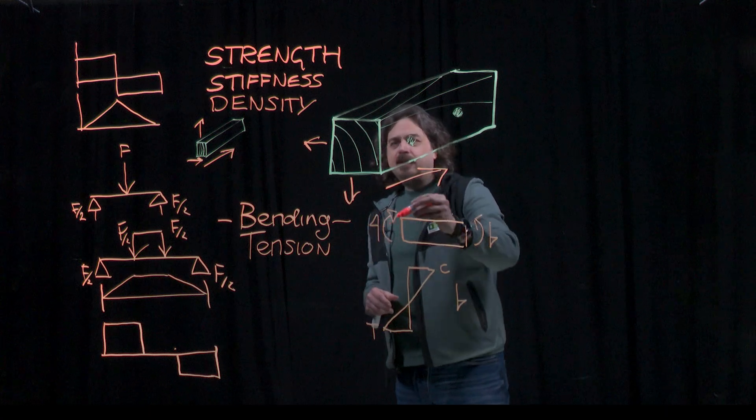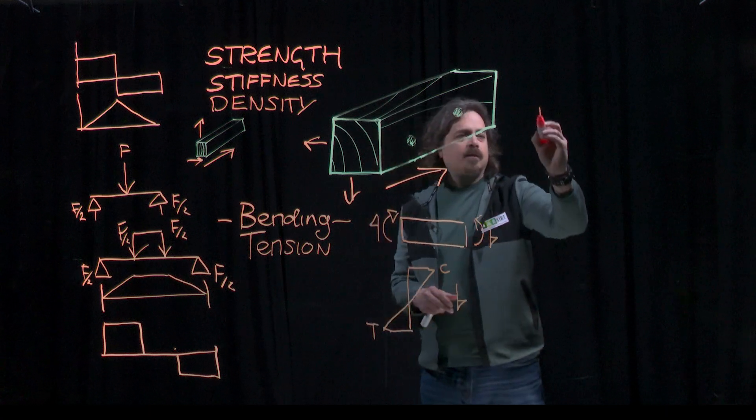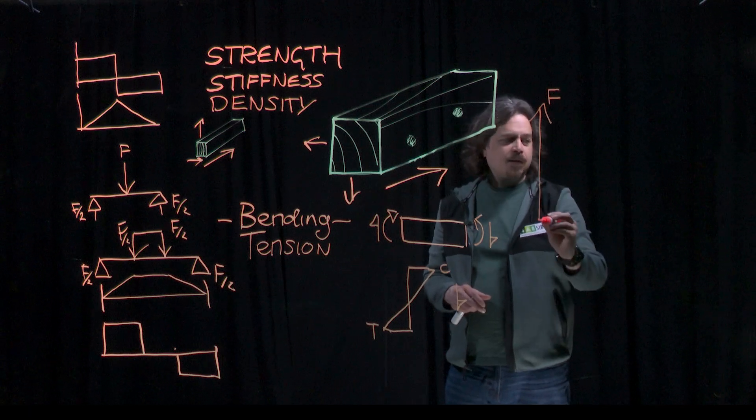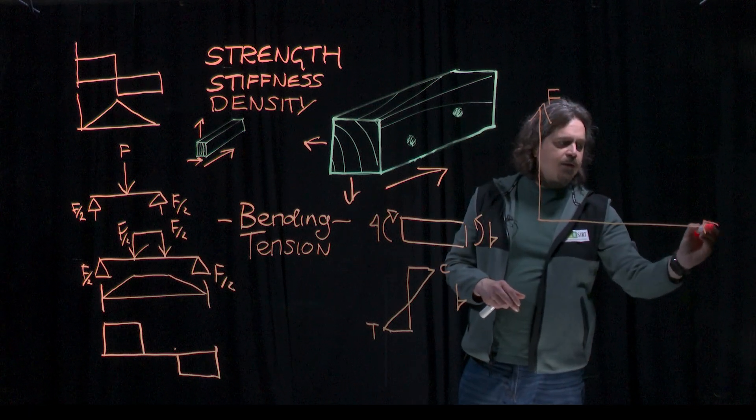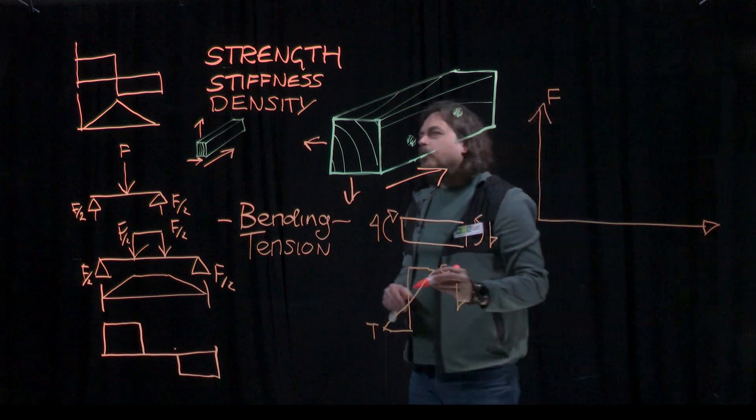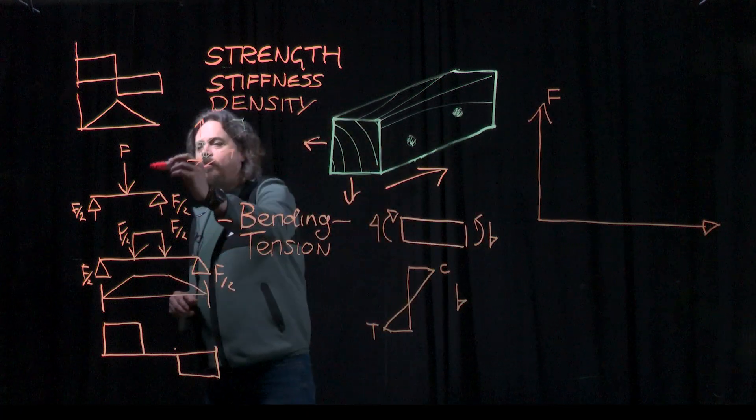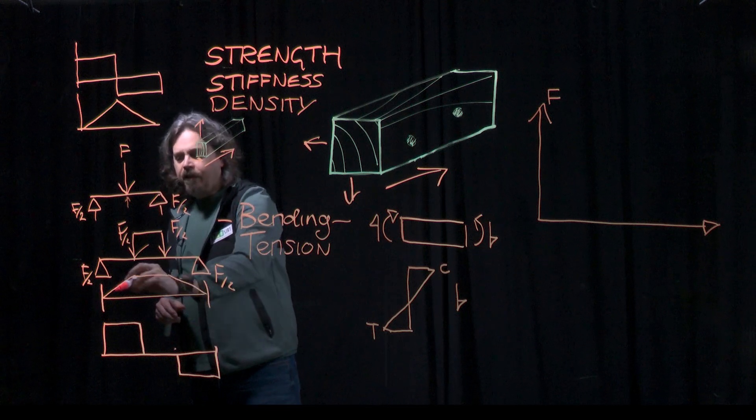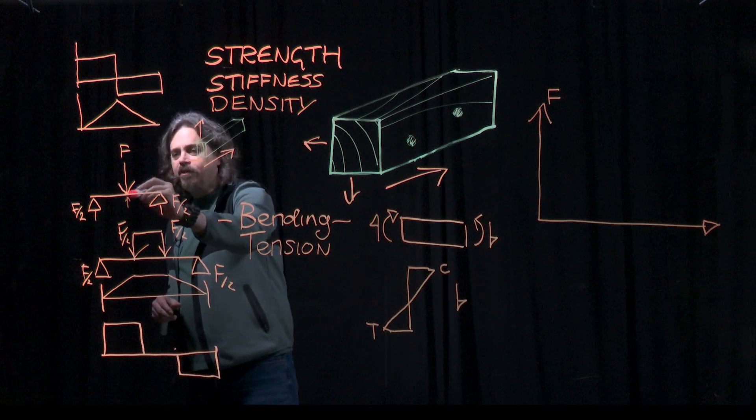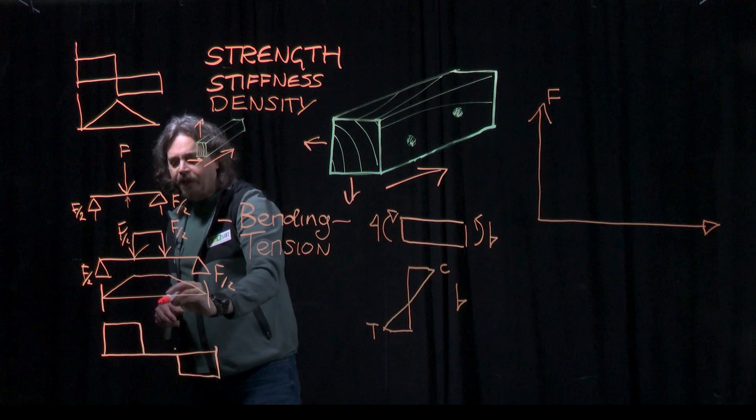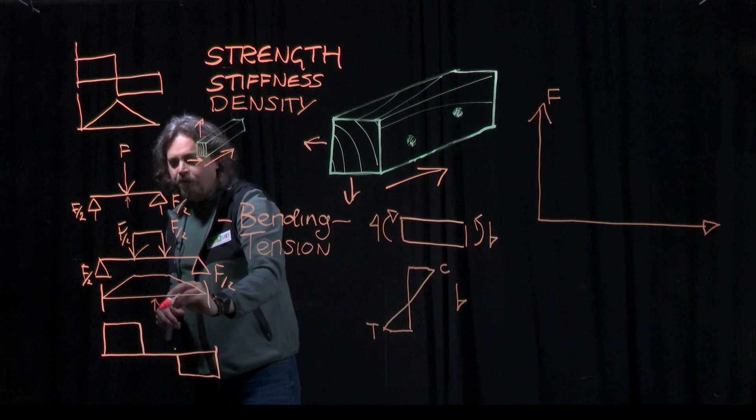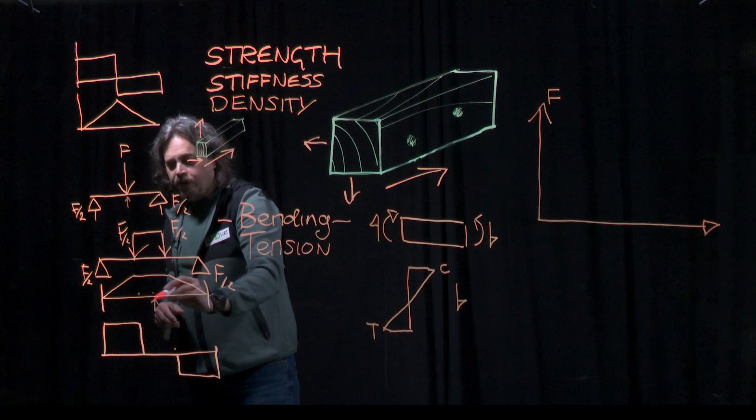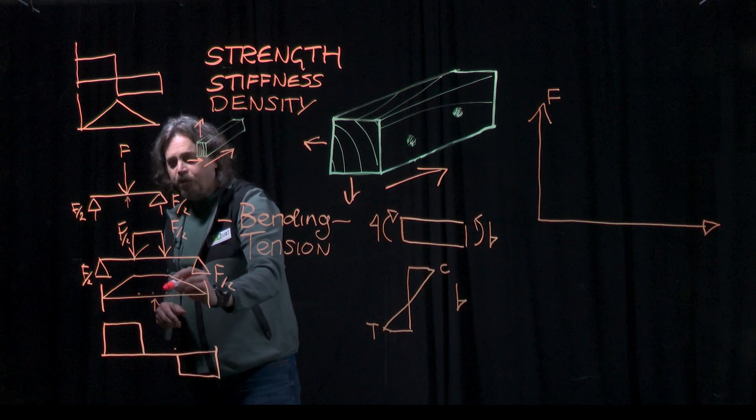When we're calculating the results from the test, we will have a graph of force applied and deflection. Normally in a three-point bending test, you're measuring deflection in the middle. In a four-point bending test, you have a choice of measuring it in the middle, or you measure just the bending of that central portion there.